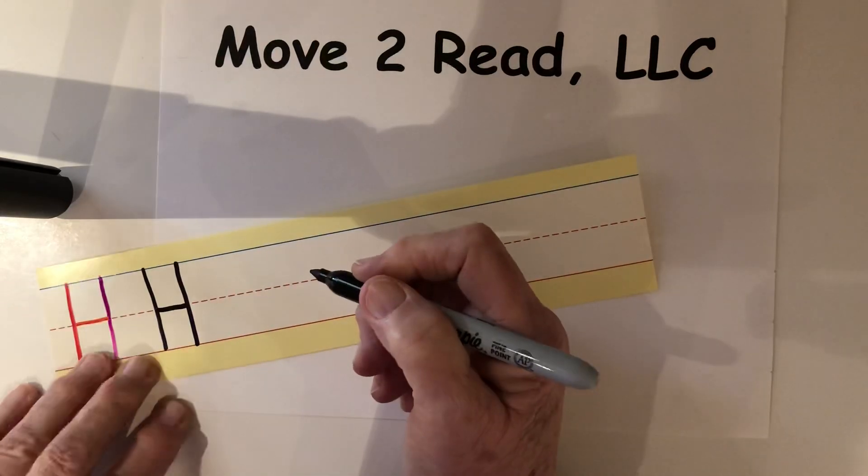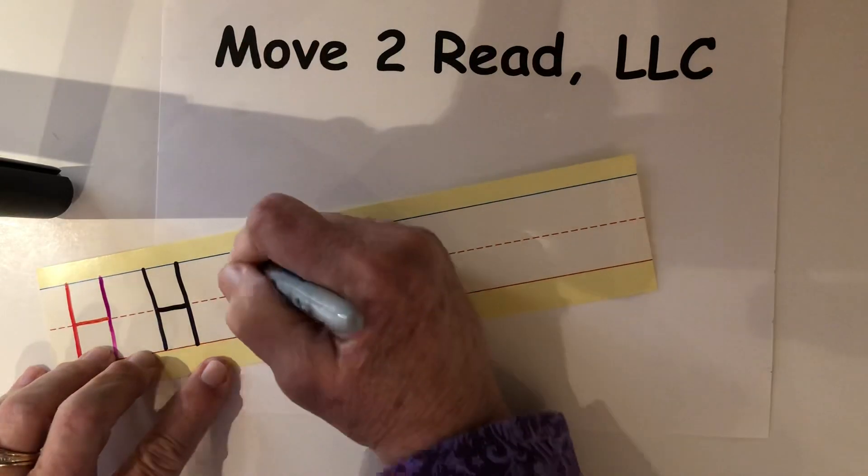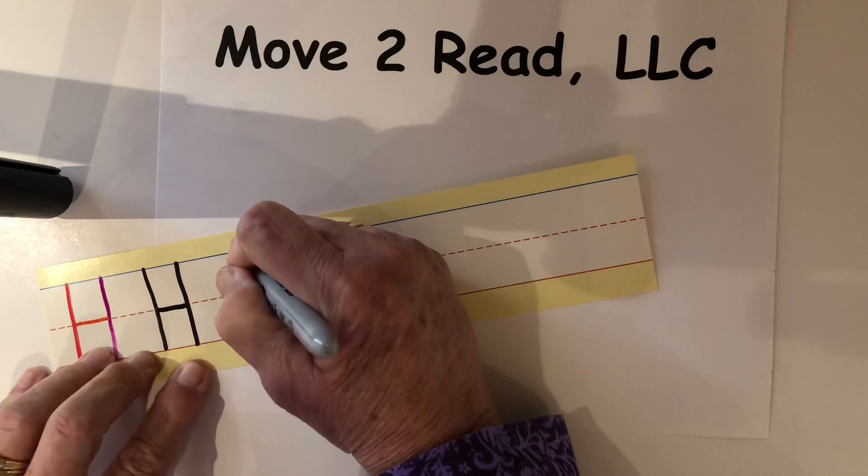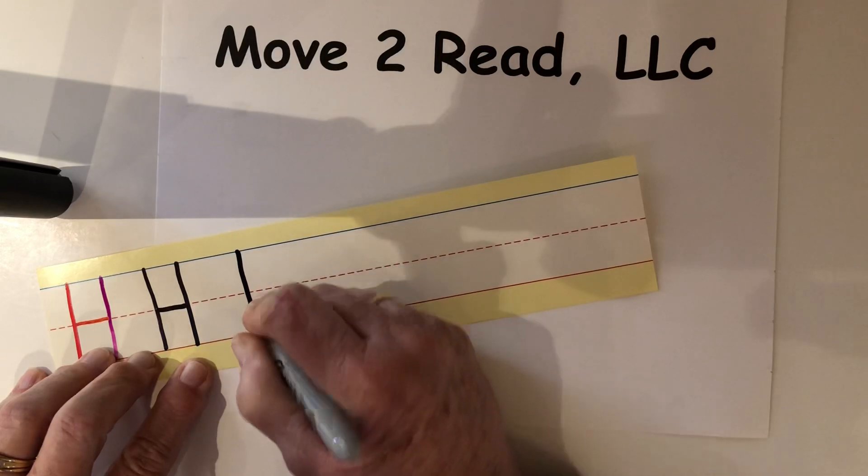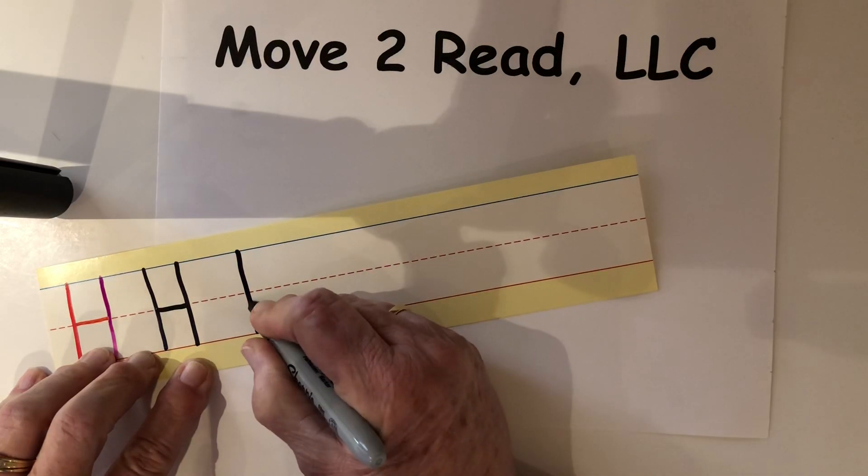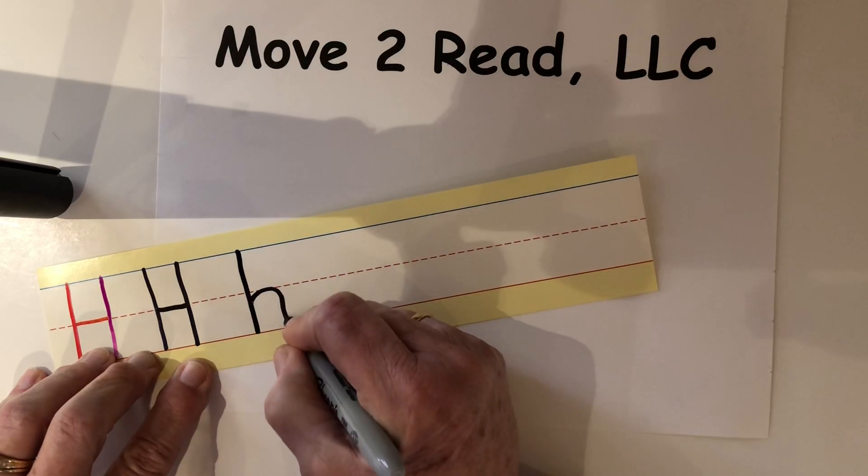Okay, now we're going to do lowercase h. We're going to start in the sky, fall to the ground, trace up, stop about right here, make a hump, fall to the ground.